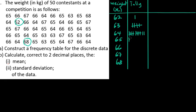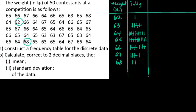For 65 we have 14 values: one two three four five, one two three four five, one two three four. For 66 we have 10. For 67 we have six, and for 68 we have two.